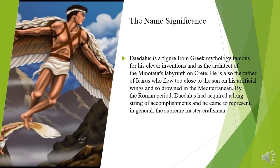One of the important elements reflecting Stephen's character is the significance of his name. Daedalus is a figure from Greek mythology, famous for his clever inventions and as the architect of the Minotaur's labyrinth on Crete. He is also the father of Icarus, who flew too close to the sun on artificial wings and drowned in the Mediterranean. By the Roman period, Daedalus had acquired a long string of accomplishments and came to represent the supreme master craftsman.